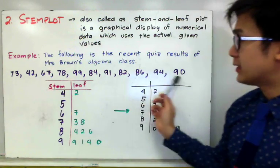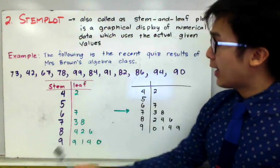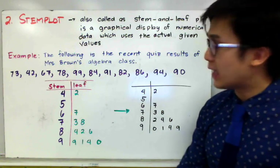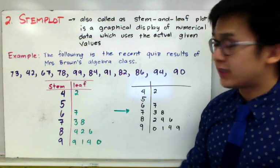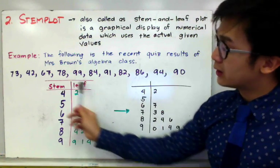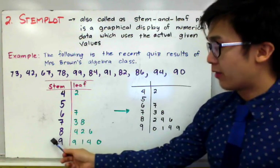So from an ungrouped data set, now we have a statistical graph that we can see, and if you will notice, by looking at the graph, we can pretty much tell that this particular class is a smart class, because most of the students in this particular quiz result scored in the 90s.